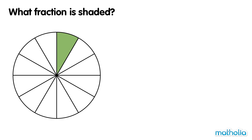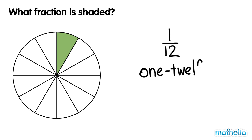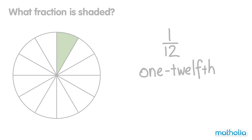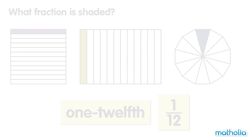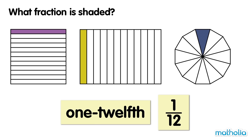This circle is divided into 12 equal parts. One part is shaded. One twelfth of the circle is shaded. One twelfth. One twelfth of these shapes are shaded.